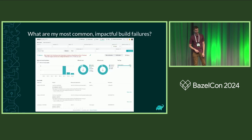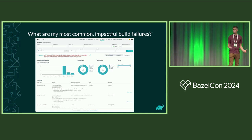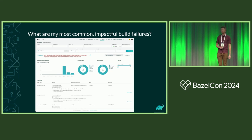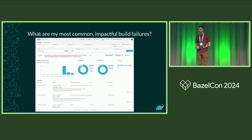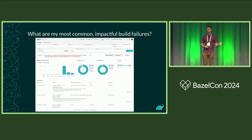Another question: what are the most common impactful build failures happening at my company or on my team? I know I have build problems, but where should I start to tackle them? You want to find out how many users, host machines, and projects are impacted. If one user is running 10,000 builds in a for loop on one machine, fixing that only impacts one user. But if 1,000 users on 1,000 different machines have 2,000 failures from one build problem, that's a pretty good place to start.